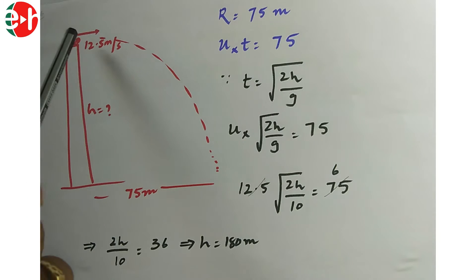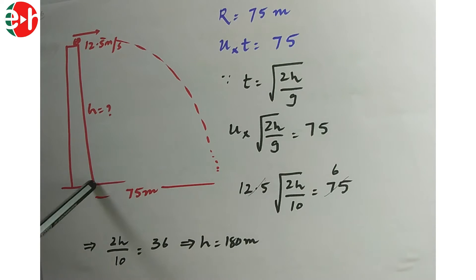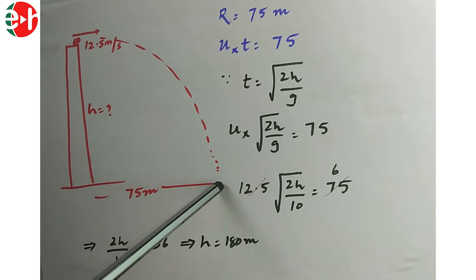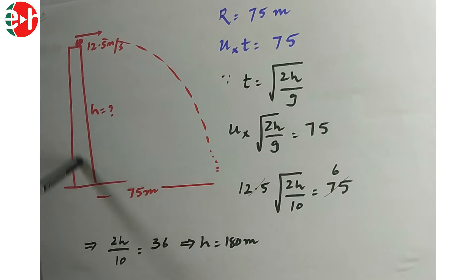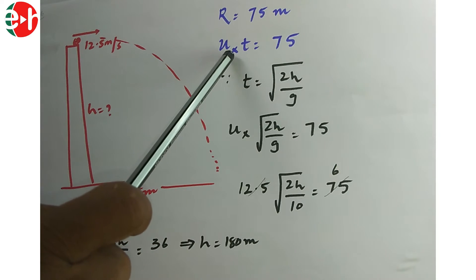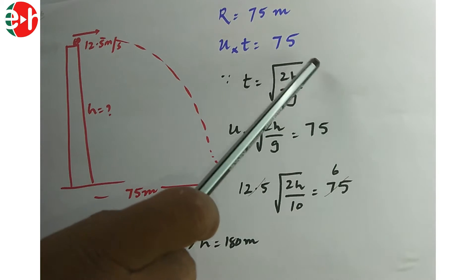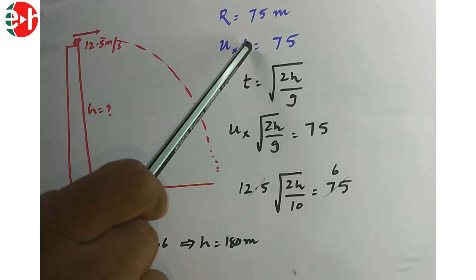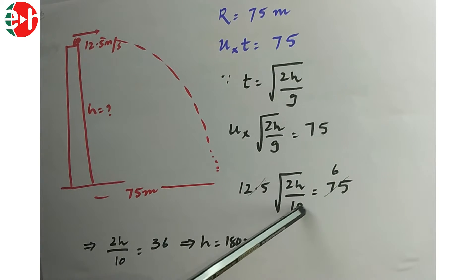An object is thrown horizontally from a certain height with a speed of 12.5 m/s and reaches the ground at a distance of 75 meters — this is the range. We need to find the height H. Using range = Ux·t = Ux·√(2H/g) = 75, substituting Ux = 12.5 and simplifying gives H = 180 meters.